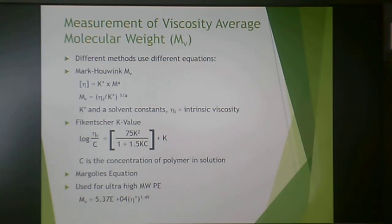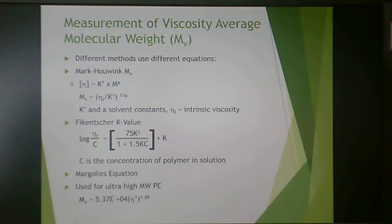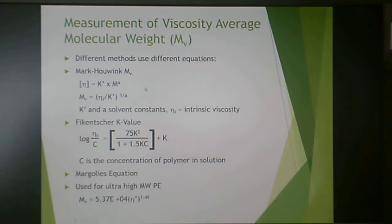Viscosity average molecular weight is measured by measuring the viscosity of a sample using the Mark-Houwink equation. In this equation, K-prime and A are solvent constants, and you measure the intrinsic viscosity. This can be done with very simple instrumentation requiring no electricity and a hot water bath, and is typically performed in early polymer chemistry laboratories.